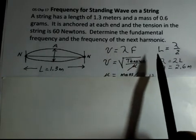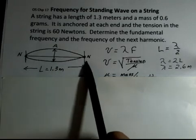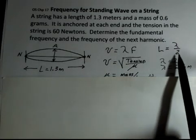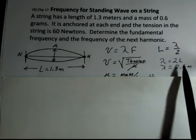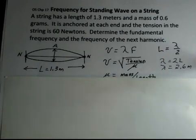Let's first take a look at the wavelength. This distance L from node to node, that's half of a wavelength. So the wavelength is 2 times L. The wavelength is 2.6 meters.